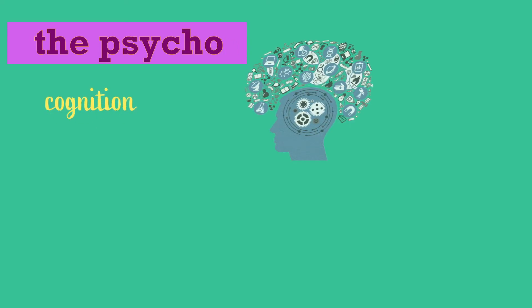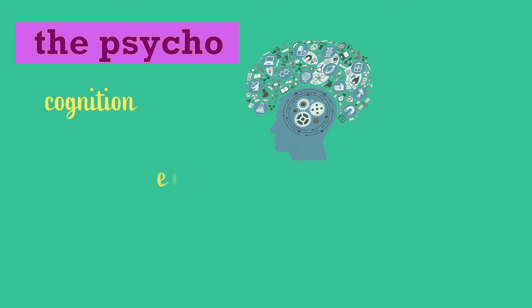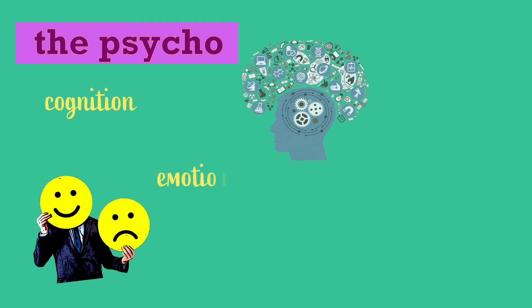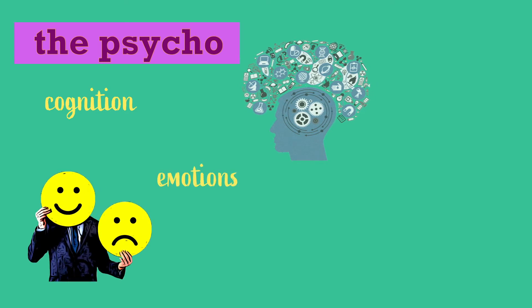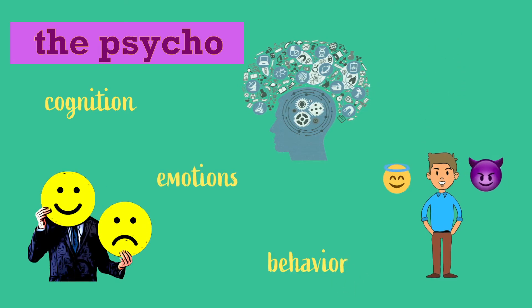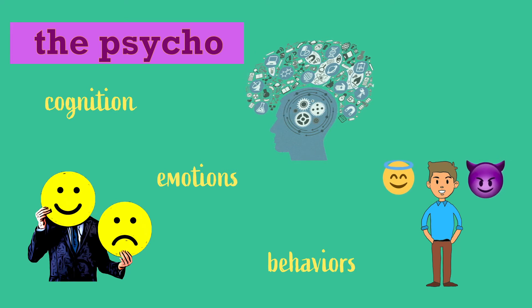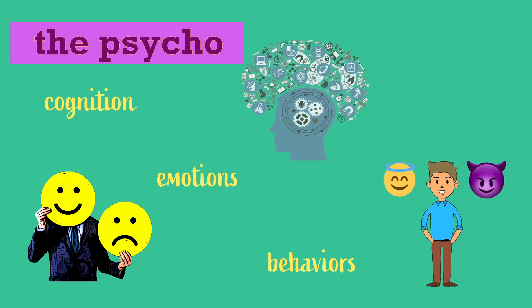The psycho aspects of health and illness are described in terms of cognitions — what type of expectations of health does the patient have? Emotions — does the patient have fear for treatment? And behaviors, like smoking, diet, exercise, or alcohol consumption.